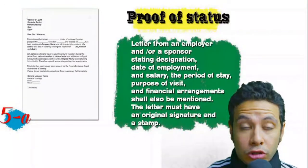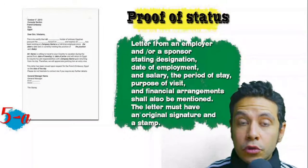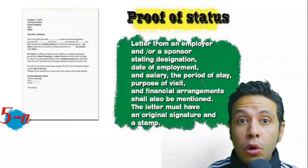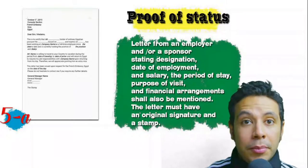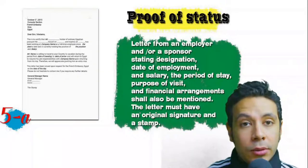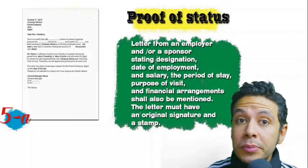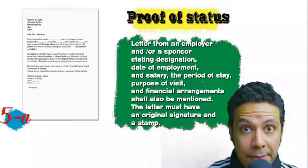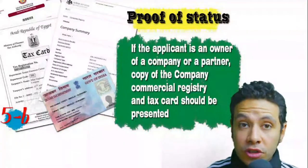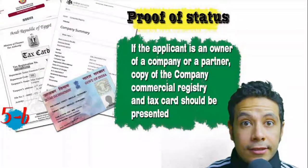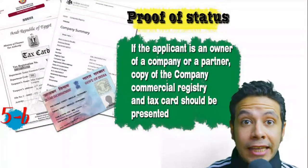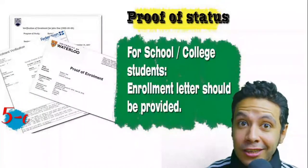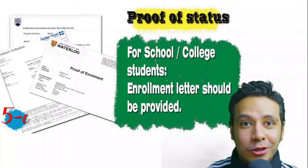In most visa application processes you will need to provide proof of status. If you are an employee, provide a letter from your employer or HR department mentioning your name, work details, salary, address, and contact numbers — with an original signature and stamp. If you own a business, present your commercial registry and tax card. If you are a student, provide an enrollment letter from your school or college.